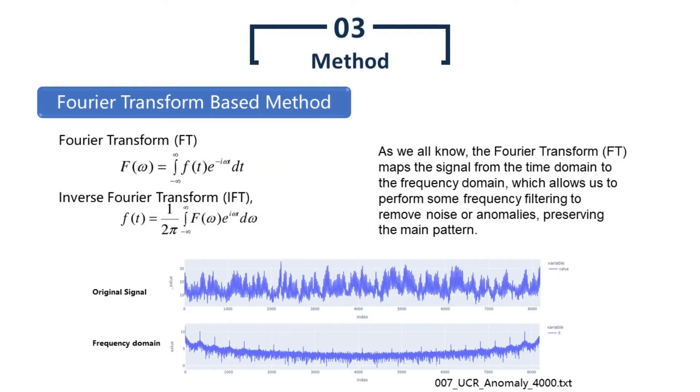The following slides will discuss the models we used in detecting anomalies. In order to find anomalies, effectively and efficiently extracting normal patterns from noisy time series signal is essential. These patterns can have different periods, amplitudes and are mixed together, and thus hard to be extracted. As we all know, the Fourier transform is widely used in signal processing, while it is rarely seen in time series anomaly detection. If we consider the Fourier transform maps the signal from the time domain to the frequency domain, which allows us to perform some frequency filtering to remove noise or anomalies, preserving the main pattern. Bottom plots show the original signal and transformed signal in the frequency domain. The sharp peaks in the second plot indicate certain frequencies from periodic patterns. Comparing to other machine learning methods which require training and updating, Fourier transform-based method is fast and interpretable and effective to most types of anomalies.